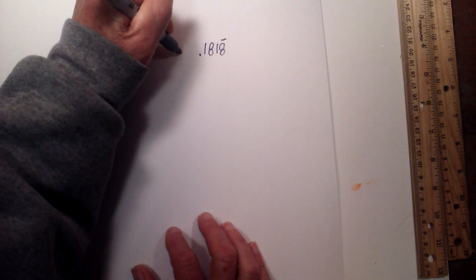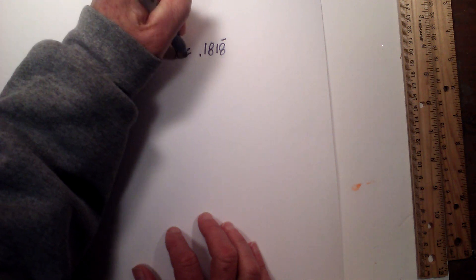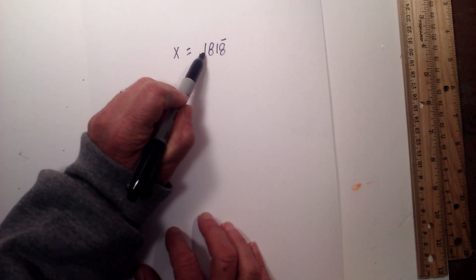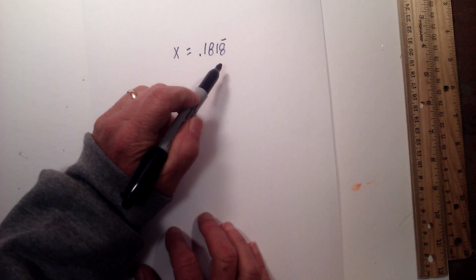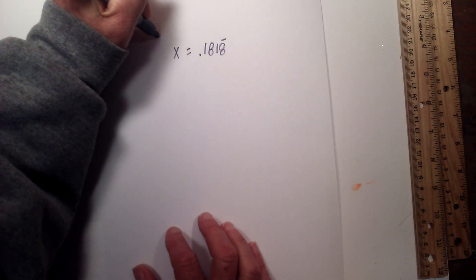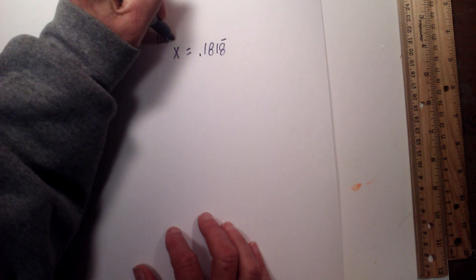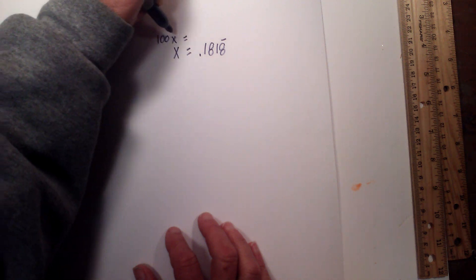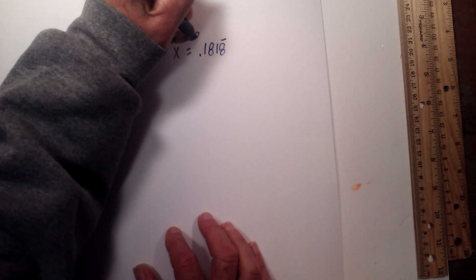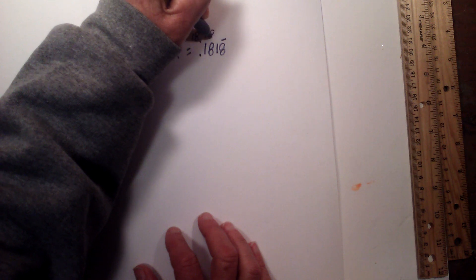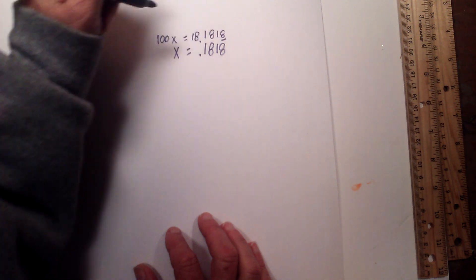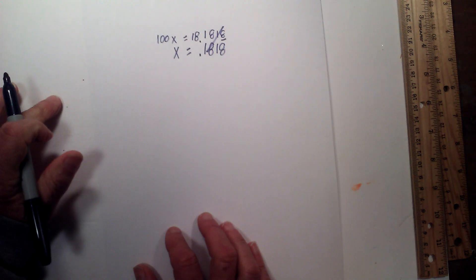Well, what we can do again, let's just set it to x. And now since we have 2 digits repeating, we're going to multiply it by 100x. So 100x equals 18.1818. All this cancels.